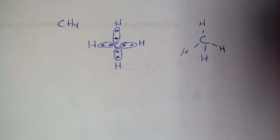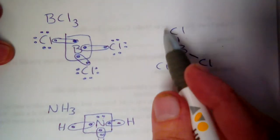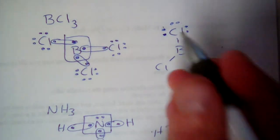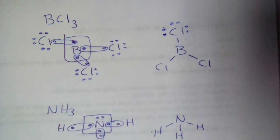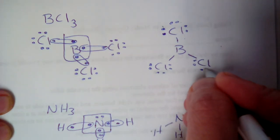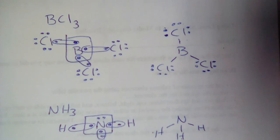The next thing we have to do is polarity, and to do polarity you have to be able to draw the structures. You'll notice I didn't put extra valence electrons on the structural formulas — we know where they go, but they would just get in the way when we start adding plus and minus signs for polarity. That's why I don't put valence electrons on structural formulas. Polarity is next, and if you can do this, you can do polarity.